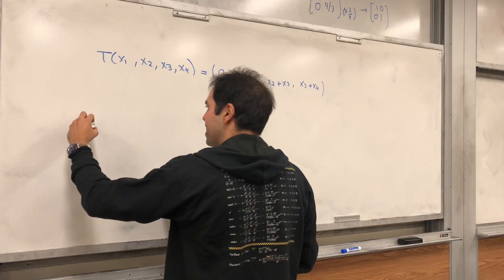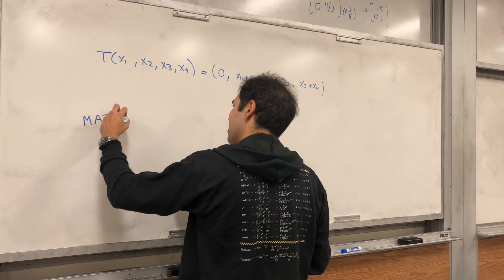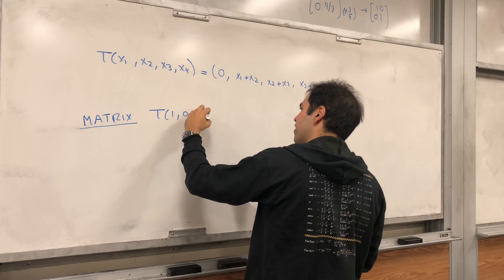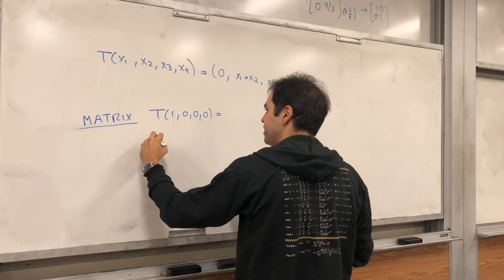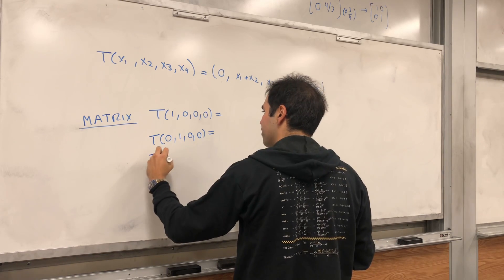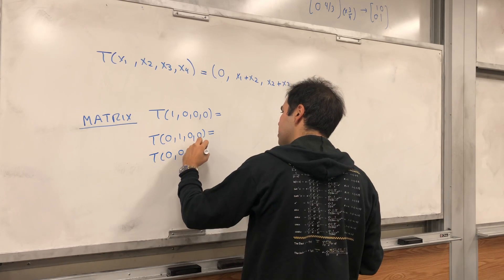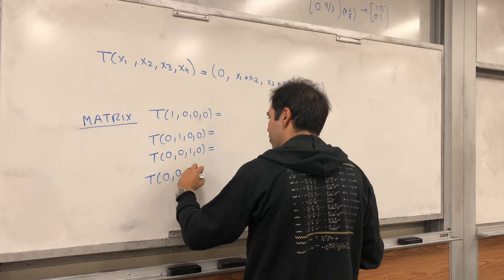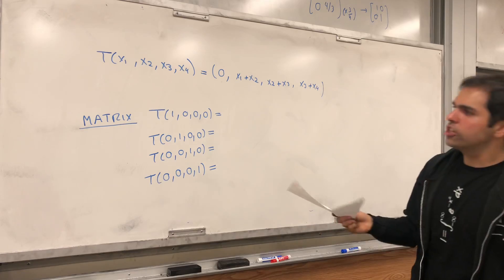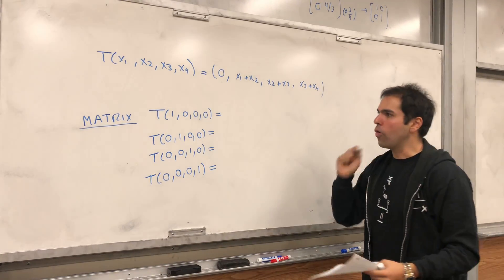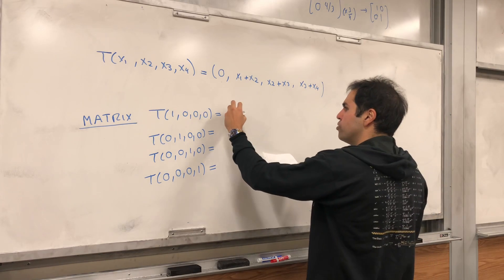How do you find a matrix? Well, you just calculate t of 1,0,0,0, t of 0,1,0,0, t of 0,0,1,0, and t of 0,0,0,1. So strictly speaking, it's a matrix of t with respect to the standard basis of R4.